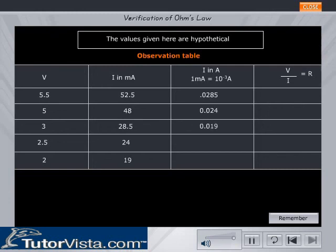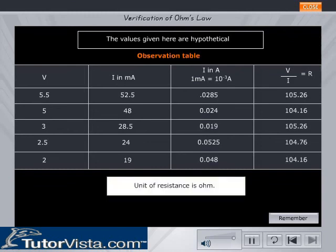Calculate V by I in each case. The value of V by I is found to be equal to a constant R, which is the resistance of the conductor, thus verifying Ohm's law. This holds good only if the temperature remains constant.